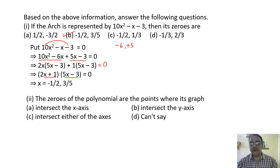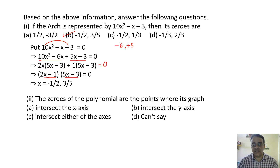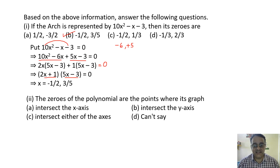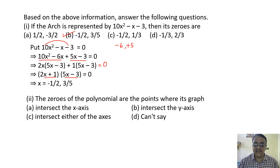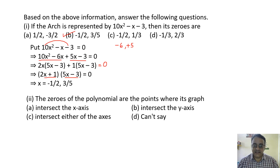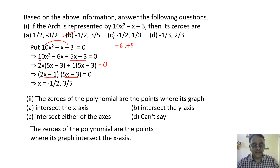The zeros of a polynomial are the points where its graph intersects the x-axis. The correct option is option A.